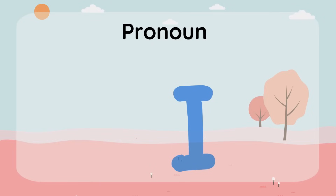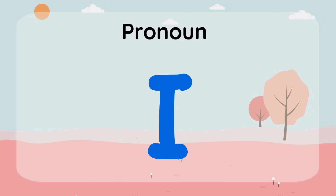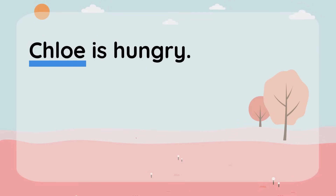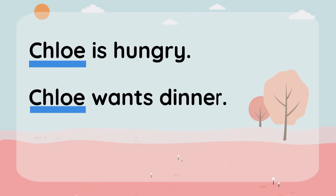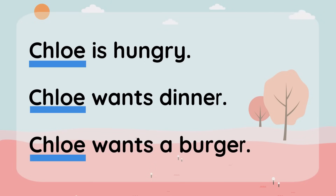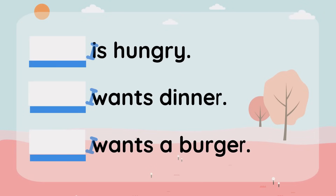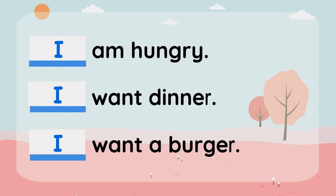Then what about the pronoun I? We don't talk about ourselves by our first name — that would just be silly. My name's Chloe, but I don't say Chloe is hungry, Chloe wants dinner, Chloe wants a burger. So which personal pronoun do we use instead? I. I am hungry. I want dinner. I want a burger.